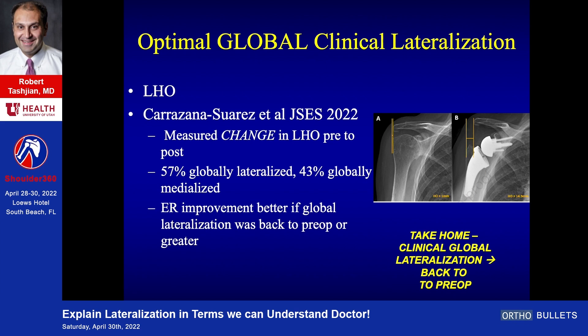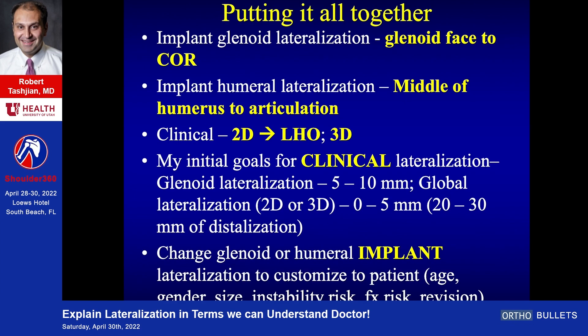In terms of optimal global clinical lateralization using lateral humeral offset, Albert Lin has recently published that external rotation improvement is better if global lateralization is back to pre-op or greater, meaning global lateralization is zero or greater. So how do you put it all together? For measuring implant glenoid lateralization: face of the glenoid to center of rotation. Implant lateralization on the humerus: middle of the humerus to the center of the articulation. Clinical lateralization: lateral humeral offset in 2D or 3D. Initial goals are to bring the glenoid back about five to ten millimeters, with global lateralization back to baseline — zero or greater.